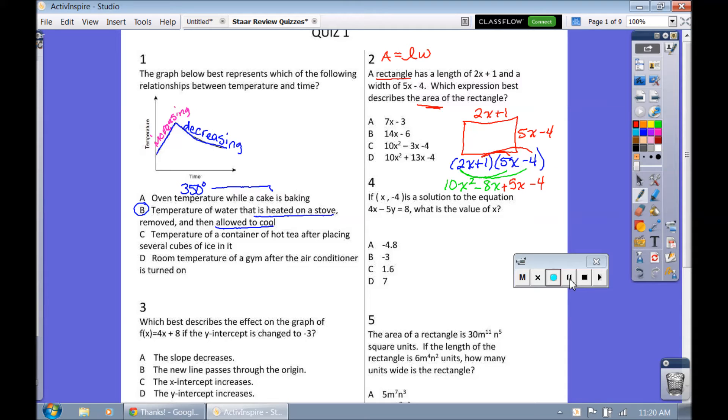Now we're going to distribute the 1. 1 times 5x. Well, that's just positive 5x. And then 1 times negative 4 is negative 4. We need to combine like terms. We have the negative 8x and the positive 5x. So negative 8 plus 5, that would make negative 3, so negative 3x. Rewrite what you have left and then match up your answer. C.